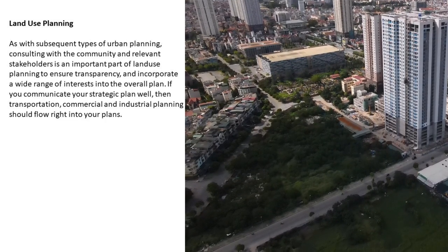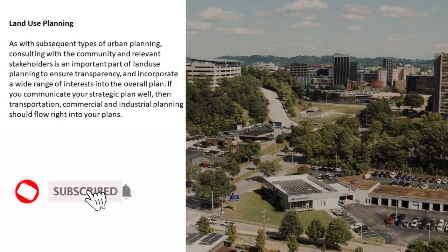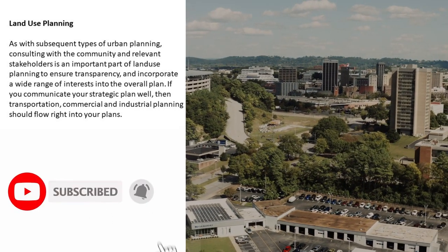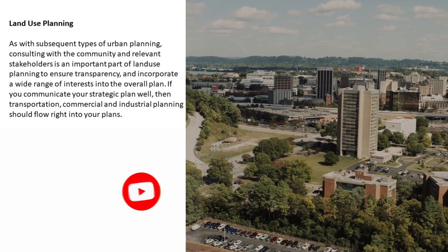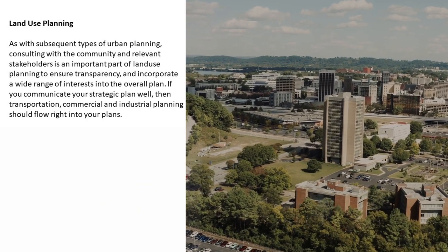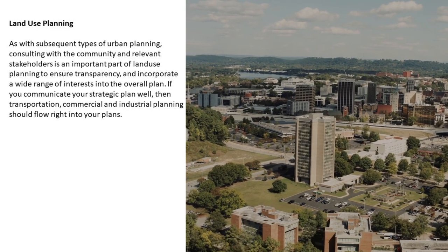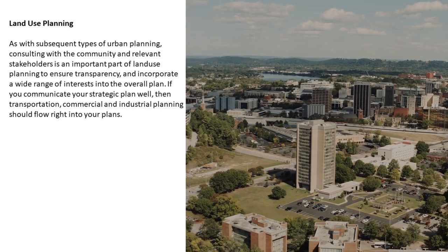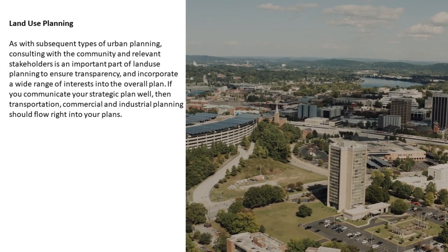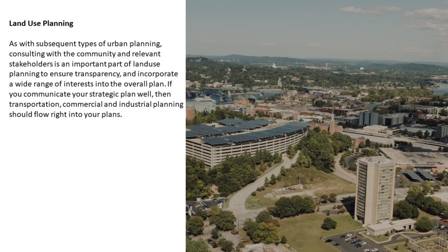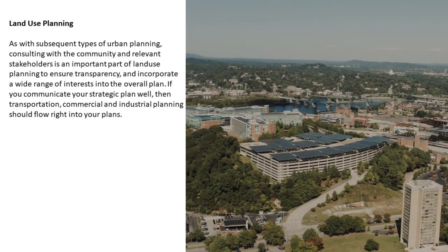As with subsequent types of urban planning, consulting with the community and relevant stakeholders is an important part of land use planning to ensure transparency, and incorporate a wide range of interests into the overall plan. If you communicate your strategic plan well, then transportation, commercial and industrial planning should flow right into your plans.